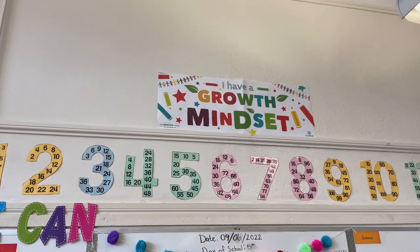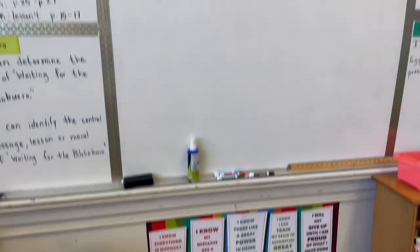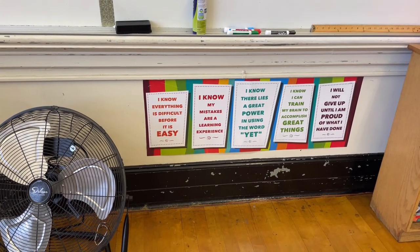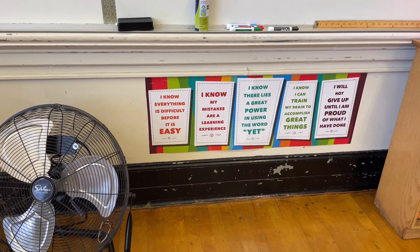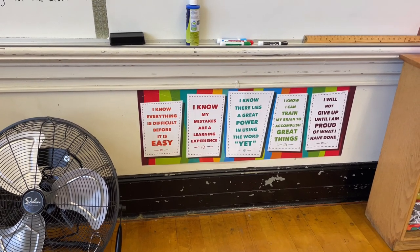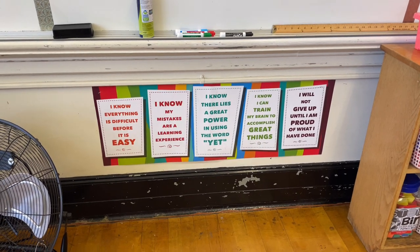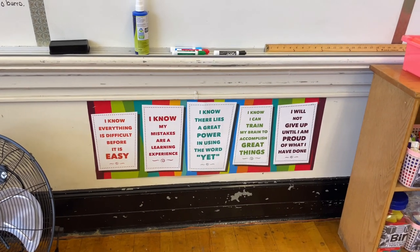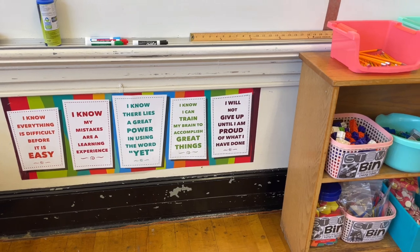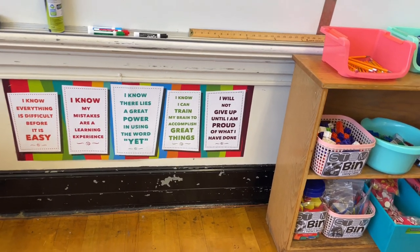Here we have our banner that says 'I have a growth mindset,' and then below we tell them what a growth mindset looks like: 'I know everything is difficult before it is easy. I know my mistakes are a learning experience. I know there lies great power in using the word yet — I'm not there yet, but I will get there. I know I can train my brain to accomplish great things. And I will not give up until I make myself proud of what I've done.'